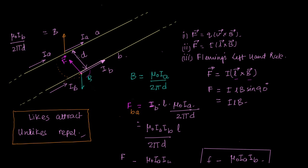So the field here will be given by B is equal to mu0 IB upon 2 pi D. This is the field here.